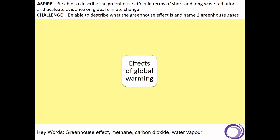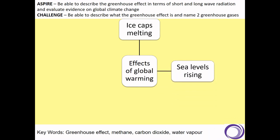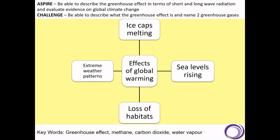To summarise the effects of global warming: first of all, there is ice caps melting, and that is linked to rising sea levels. There's also a loss of habitats — first from losing land due to those rising sea levels, but also because of temperature changes happening and changes to weather patterns. There are other effects as well, but these are the four main ones for you to remember.